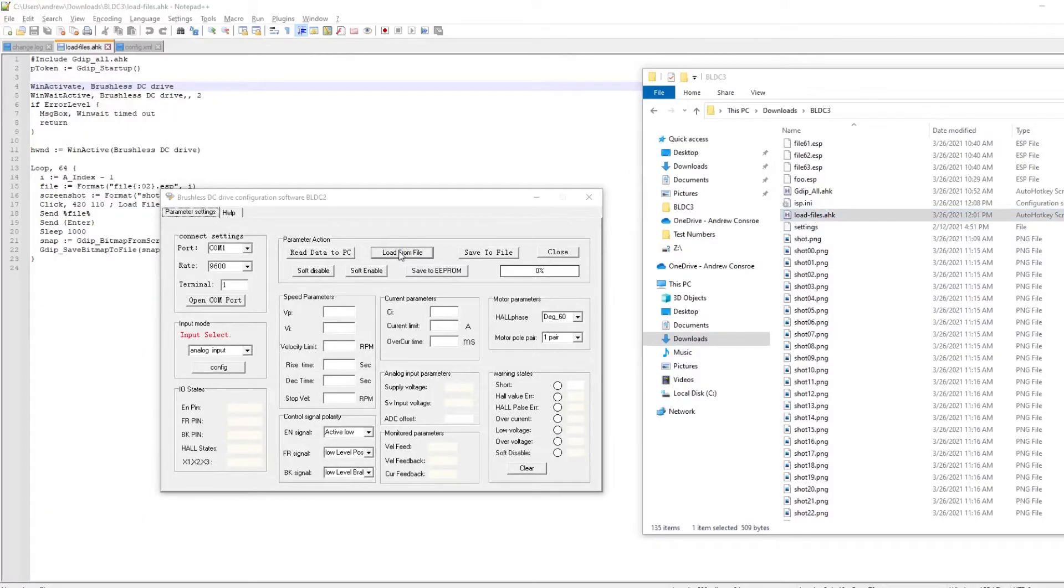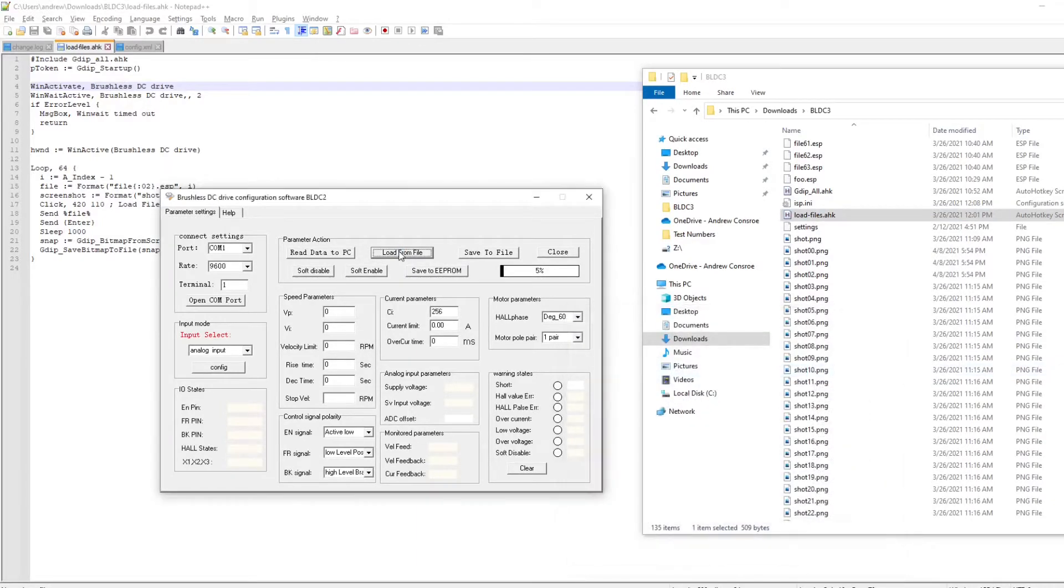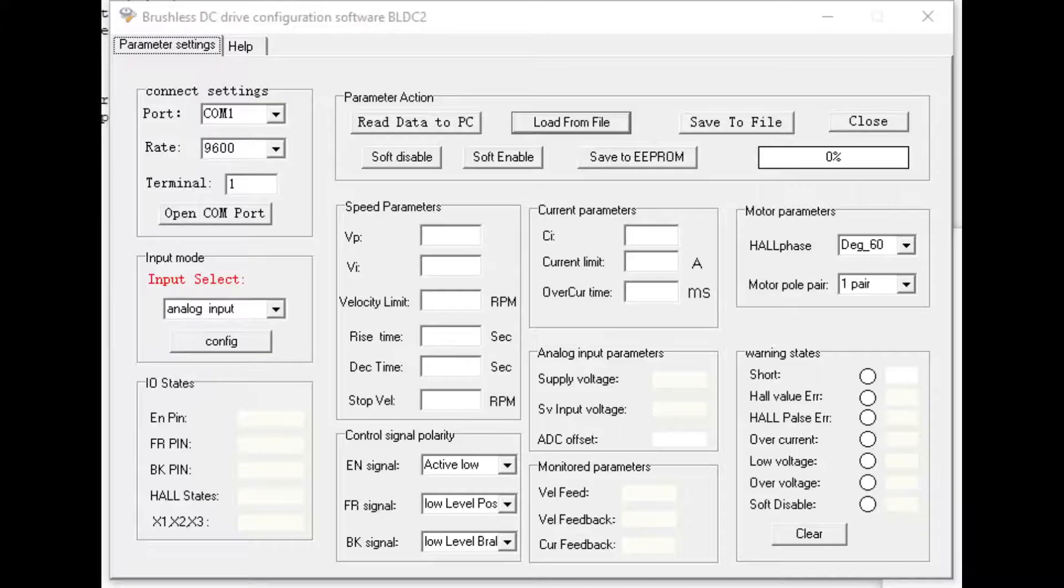But then the software wasn't saving my acceleration profiles, and so I had to reverse engineer the file format by trying 64 different configuration files to figure out which bytes went where. And then I could write that configuration file directly and automated loading and showing those so I could just pick it out of the right image.